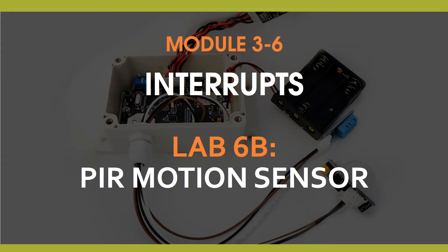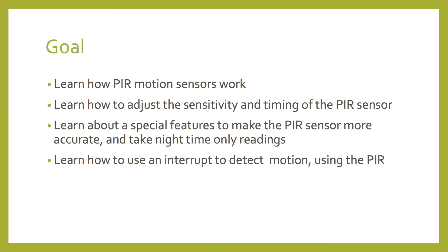In this lab we'll be capturing when a motion is detected by the PIR Motion Sensor, turning on an LED and writing a printout to the serial monitor. The goal of this lab is to learn about how PIR Motion Sensors work, how we can adjust the sensitivity and timing on it, how we can make it more accurate to reduce false events, how we can set it to take readings in the night time only, and we'll also be writing our interrupt routine to handle motion detection events.